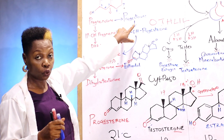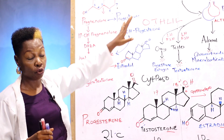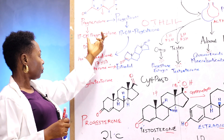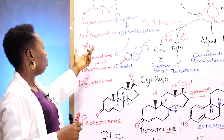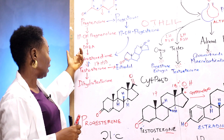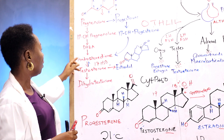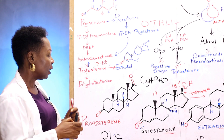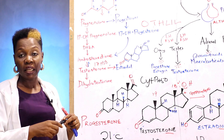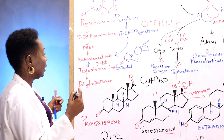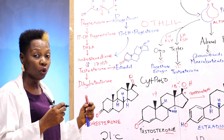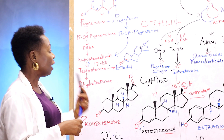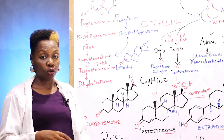Pregnenolone has two fates: it can be converted to progesterone, which is the first hormone, or to 17-hydroxypregnenolone. 17-hydroxypregnenolone is converted to DHEA, and then DHEA is converted to androstenedione. Androstenedione is an androgen and it is an aromatisable androgen — meaning it is an androgen that can be converted to estrogen.